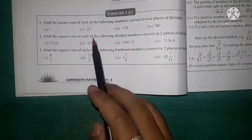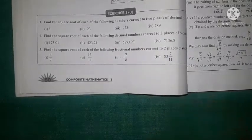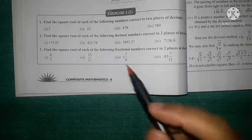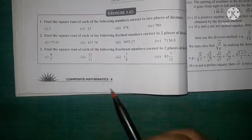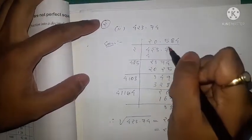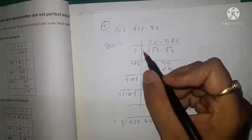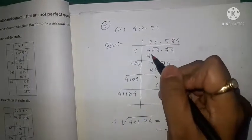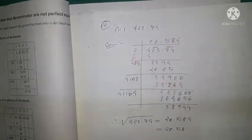Let's move to question 2: find the square root of each of the following decimal numbers correct to 2 places of decimal. We'll do Roman numeral II: find the square root of 423.74. We make pairs: 74 and 23, and 4 remains alone. Two squared is 4, remainder 0, then 23 comes down.